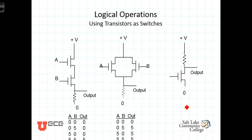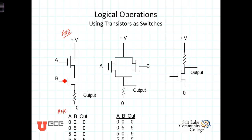The first logic gate we're going to look at is the AND gate, which performs the logical AND operation. The AND operation says that both A and B must be on in order for there to be an output. Here's our AND gate — it has two inputs. The inputs can either be tied to ground (zero volts) or to plus five volts. That gives four different possible input combinations.